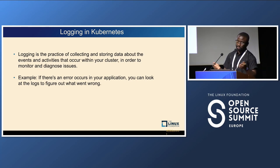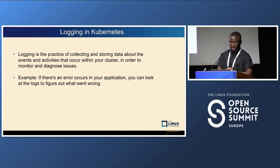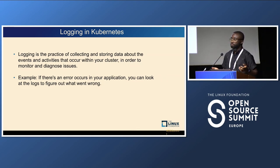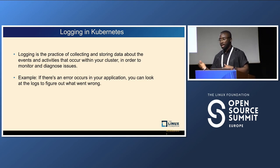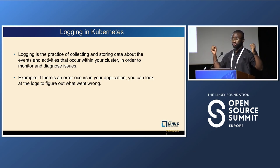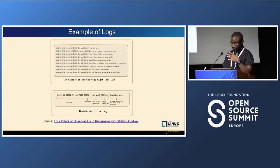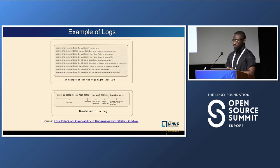Logging in Kubernetes involves collecting and storing data about events to diagnose issues when they occur. An example: if there's an error in your application, the first step is to look at the logs. In the fintech or financial industry, you have to keep logs for compliance purposes — sometimes for a few years — so you can submit them when needed. A log typically contains: timestamp, log level, component name, unique identifier, and message. In Kubernetes you see entries like 'starting up container', 'failing', and other events you might encounter.